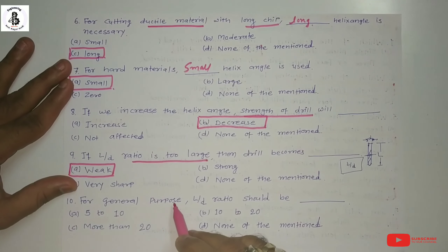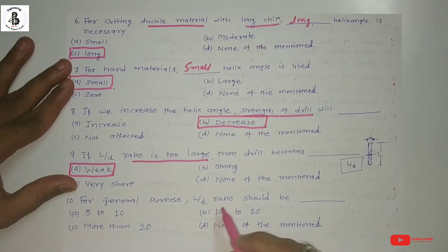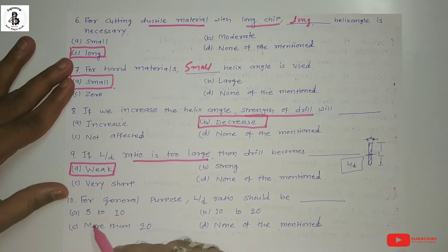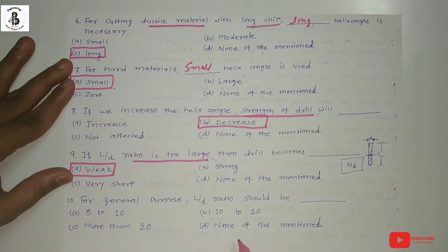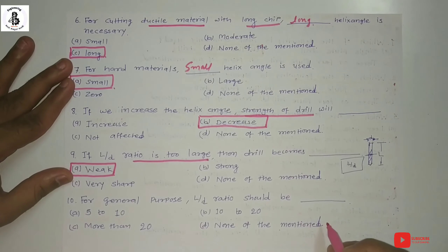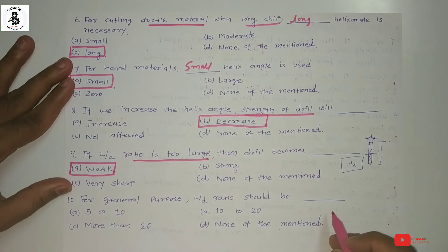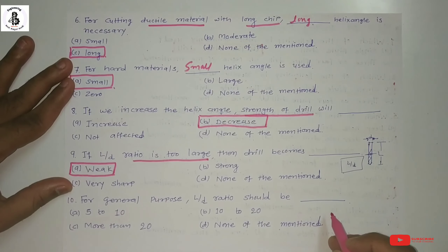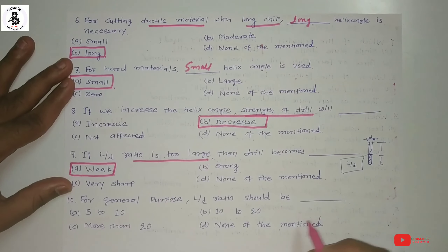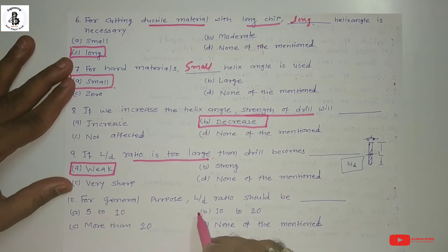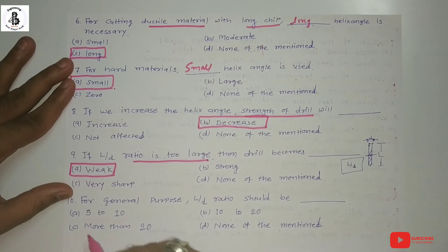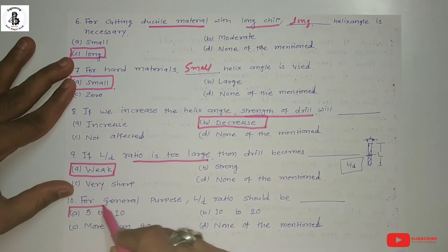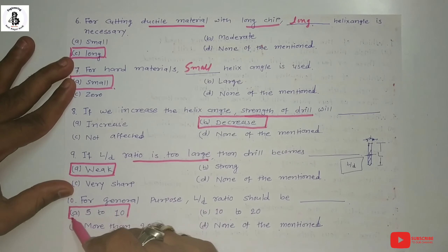Question ten: For general purpose, the length to diameter ratio should be — Option A 5 to 10. Option B 10 to 20. Option C more than 20. Option D none of the above. For general purpose deep drill holes, the L by D ratio should be between 5 to 10. So option A, 5 to 10, is adopted.